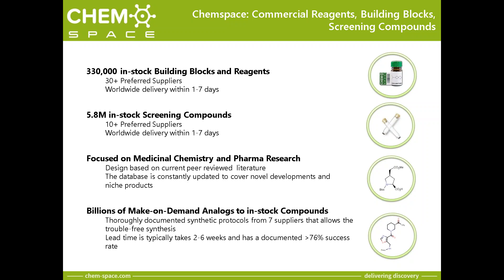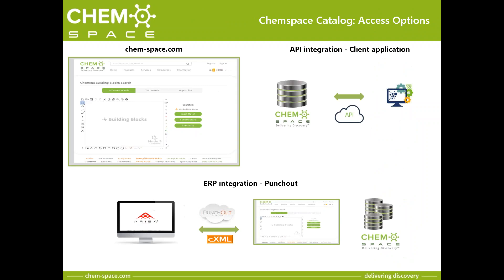Along with that, we have billions of make-on-demand analogues to these in-stock compounds. These make-on-demand compounds are based on several documented synthetic procedures from seven well-known suppliers. The typical lead time for these make-on-demand compounds is between two and six weeks, and the success rate for the synthesis of these molecules is over 75%. The ChemSpace catalog is available online through the chemspace.com webpage. We support API integration with client applications and integration with ERP through PunchOut.